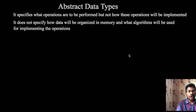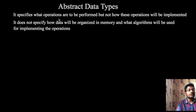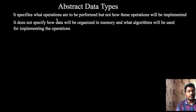Abstract data types. The definition of abstract data types is: it specifies what operations are to be performed, but not how these operations will be implemented. So what I want to say is, we know what operations are there, but we don't know how those operations are implemented.